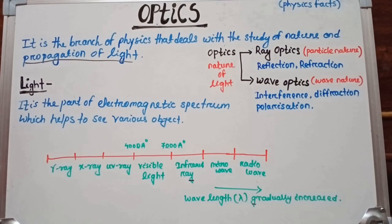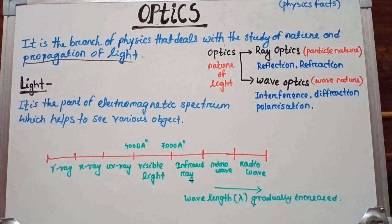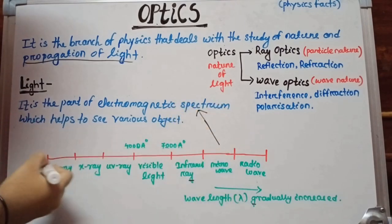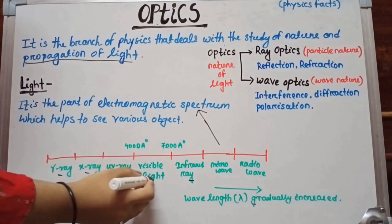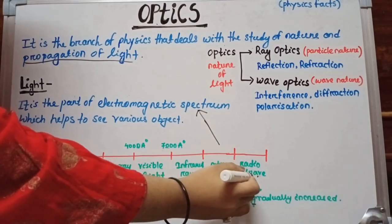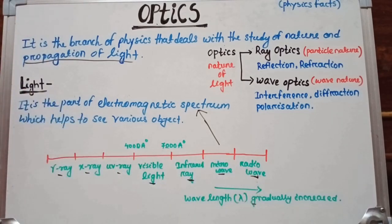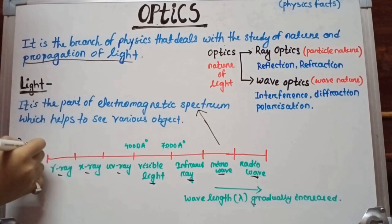Now, what is the electromagnetic spectrum? It is the orderly distribution of electromagnetic waves. This includes gamma rays, X-rays, UV rays, visible light, infrared rays, microwaves, and radio waves. It is a complete distribution pattern according to frequency and wavelength.